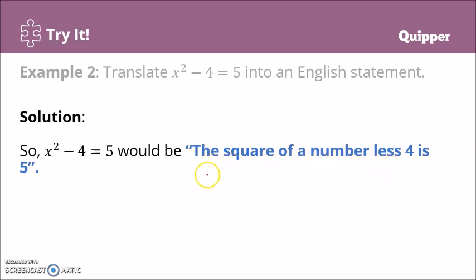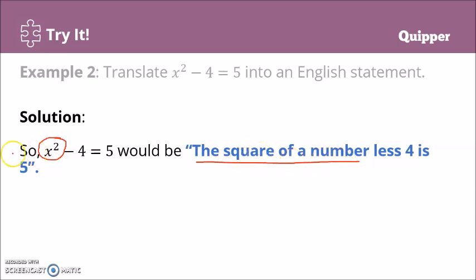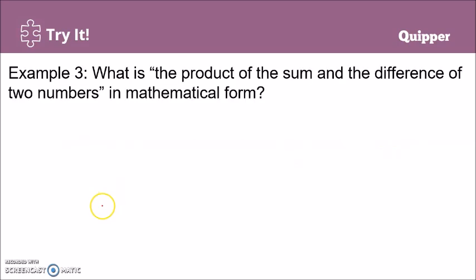Breaking it down: x squared means 'the square of a number' since x stands for any number. The minus 4 becomes 'less 4.' The equals sign becomes 'is,' and the 5 stays as 5. So the full English sentence is: 'The square of a number, less 4, is 5.' Now let's look at example 3, where we translate an English sentence into a mathematical sentence.